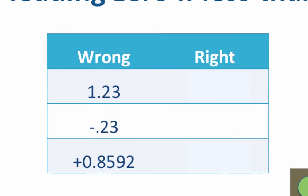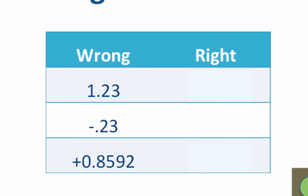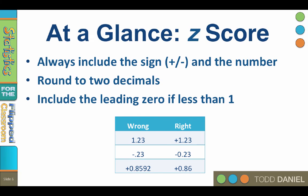So let's practice. Now what is wrong with this first z-score? They forgot to include the sign. What's wrong with the second z-score? Forgot to include the leading zero. And what's wrong with that third z-score? We should round to two decimals. So that is your introduction to z-scores. Now let's figure out what to do with them.